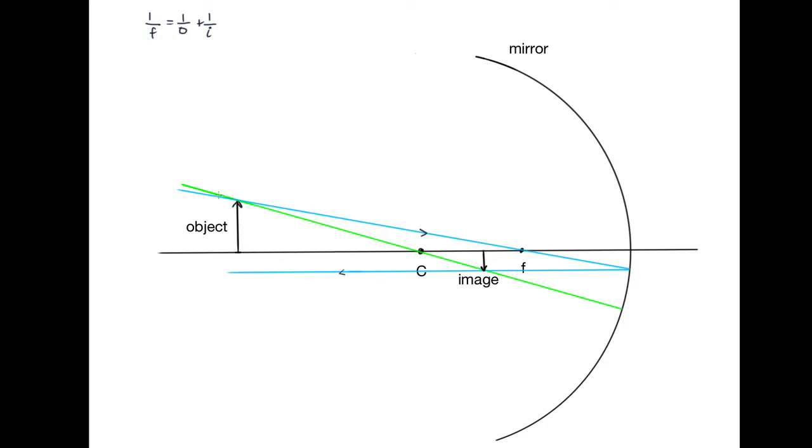I've drawn another ray coming from the object and going through the center of curvature. If it goes through the center of curvature, then it hits the mirror at right angles and is reflected back along the same line.